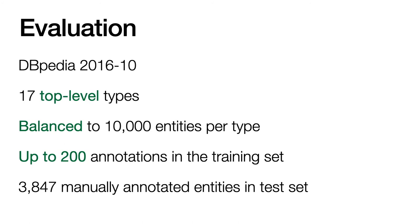For evaluation, we chose DBpedia version 2016 October, and only kept 17 of the most common top-level types. For the training set, we did some balancing to make sure there are exactly 10,000 entities per type. There are only noise labels in the training set, and during the active learning process, up to 200 entities were annotated with gold labels. After training the models, we used the model to identify wrong entity types in a test set with around 4,000 manually annotated entities.